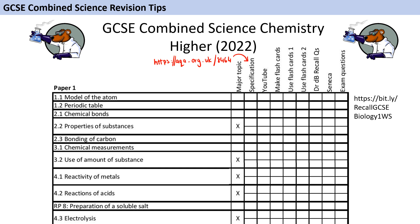Each time you do 20 minutes of revision, you just note down the date so you can keep track of how much you've done. So say, for instance, on Monday you start off and look at the specification for properties of substances, then you watch a YouTube video and make some notes, then you make some flashcards — and all that together takes you an hour, so you write down the date three times. Then in a few days' time you look at the specification for the diamond and graphite topic, spend a bit of time using a revision app, and decide to do another section on that app — so that gets noted down as well.